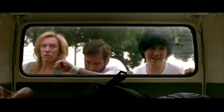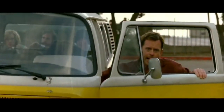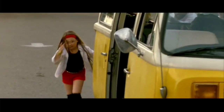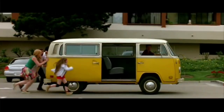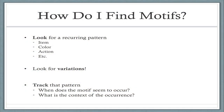As we view actively, we need to look for variations. How does the motif start at the beginning of this film, and then by 90 or 120 minutes in, how has that motif changed? How has its context changed — become different, more or less impactful? We need to track that pattern: where does the motif seem to occur, what is the context of its occurrence? If we are actively viewing these films, we can notice, track, and observe the pattern, and then look for any variations that might be happening.